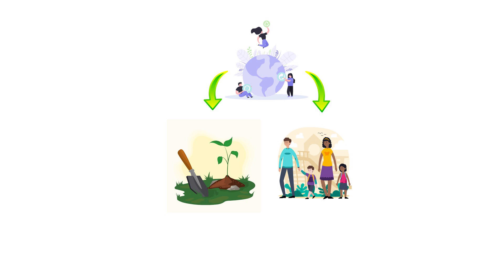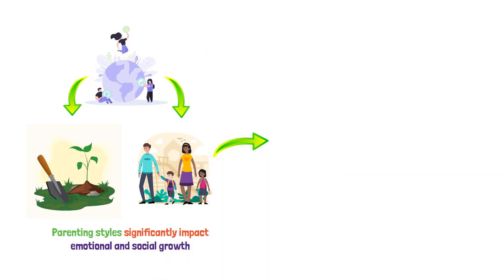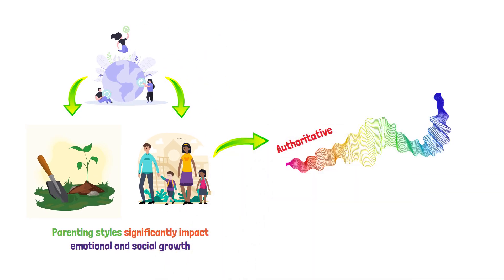For instance, parenting styles significantly impact emotional and social growth. The spectrum ranges from authoritative to uninvolved, each with its distinct effects on a child's development.